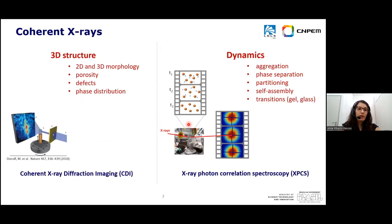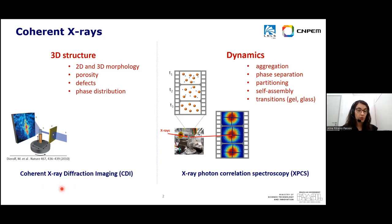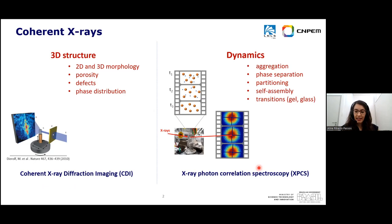Using coherent X-ray techniques, we can study the 3D structure of materials using coherent X-ray diffraction imaging. This gives us information about 2D and 3D morphology, porosity, defects, and phase distribution. Using X-ray photon correlation spectroscopy, XPCS, we can probe dynamics such as aggregation, phase separation, and transitions. These techniques become even more powerful when we perform in-situ and operando studies.